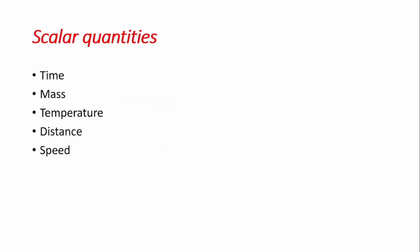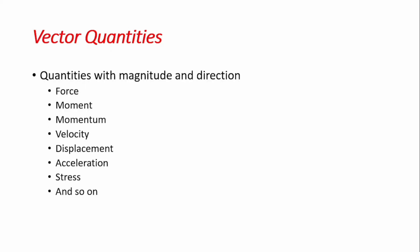Scalar quantities are quantities that have just magnitude without direction. Time, mass, temperature, distance, and speed are all examples of scalar quantities. Vector quantities, however, are those that have both magnitude and direction. As far as statics is concerned, we will be dealing with a lot of vector quantities — force, momentum, velocity, displacement, acceleration, and so on. Statics especially will deal greatly with force and moments, which are vector quantities.